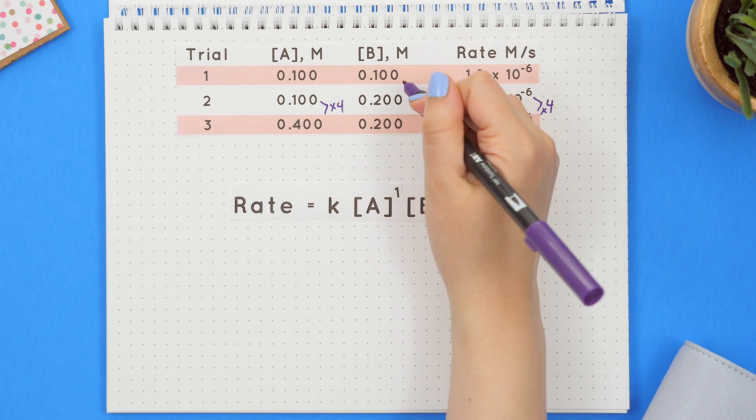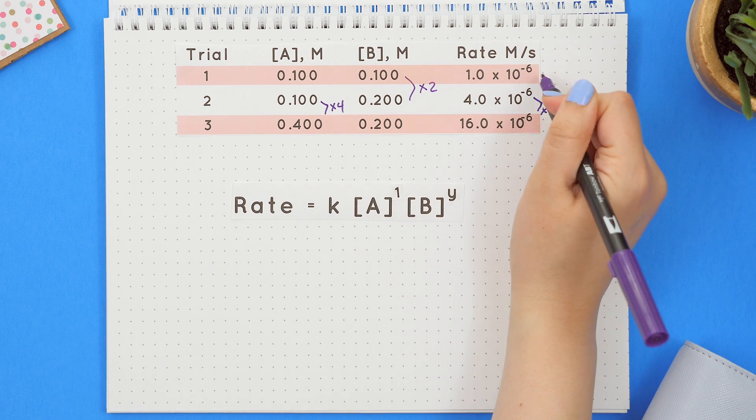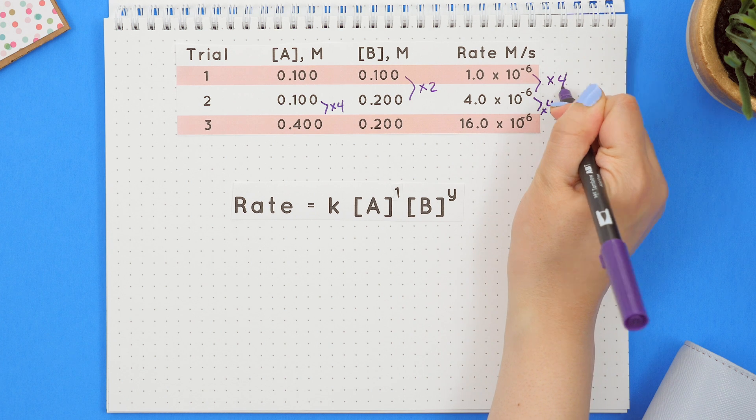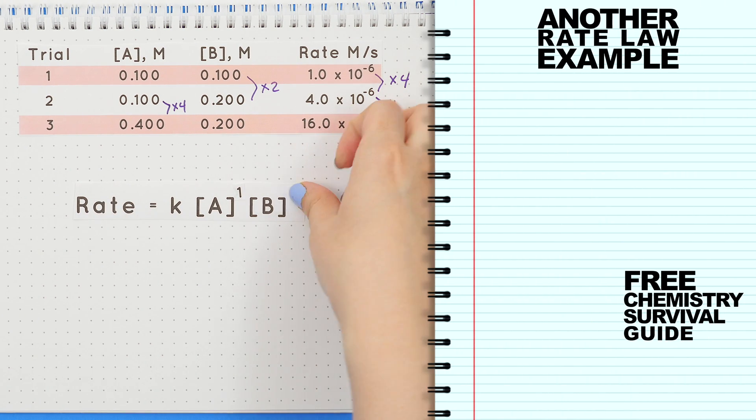For reactant B we found it was second order since we multiplied by two and then the rate by four. So we will replace the y with a two and this is our rate law.